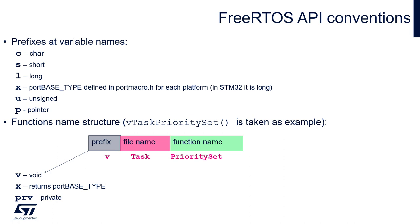For the function name, a very nice naming convention is implemented. The prefix tells us about the return value: 'v' is void, 'x' returns port base type, and 'prv' is private. Then there is the file name where the function is defined — for example, 'task' means the function is defined within the task.c file. The last part is the function name itself.